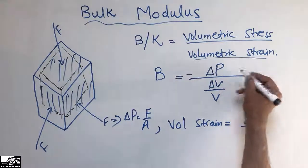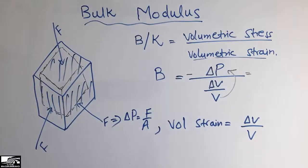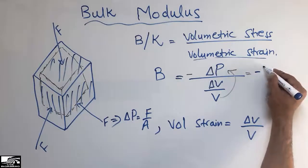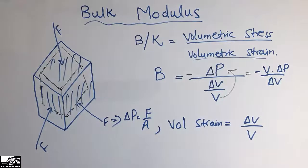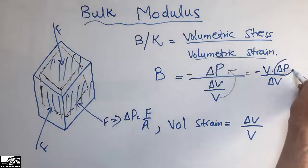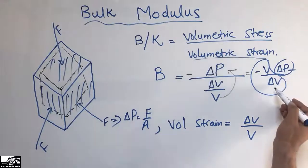Now I can modify this. To simplify, it will be negative V dot delta P over delta V, where this is the volumetric strain and this is the volumetric stress.